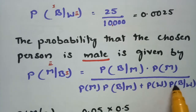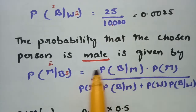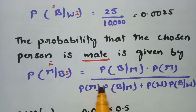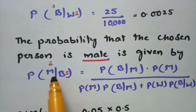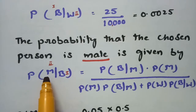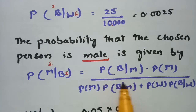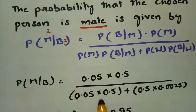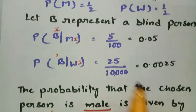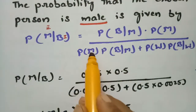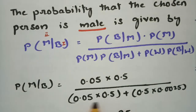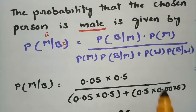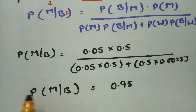Substituting the values into Bayes' theorem: P(B|M) = 0.05, P(M) = 0.5, P(W) = 0.5, and P(B|W) = 0.0025. So the numerator is 0.05 × 0.5, and the denominator is (0.5 × 0.05) + (0.5 × 0.0025).